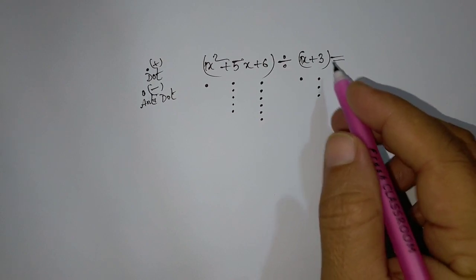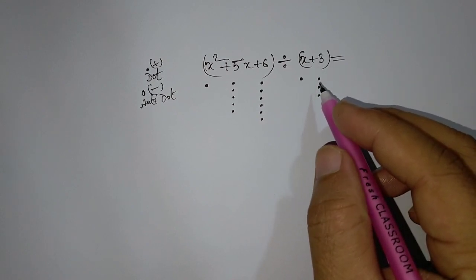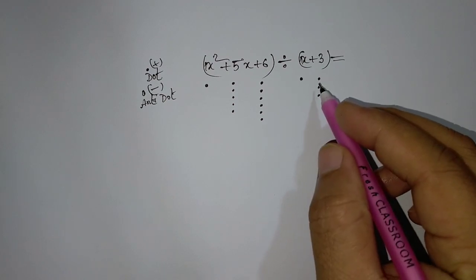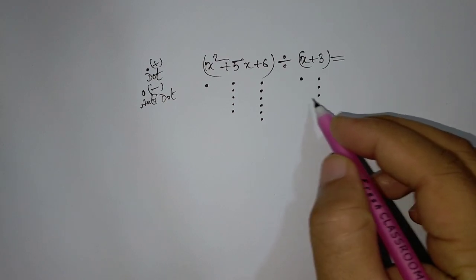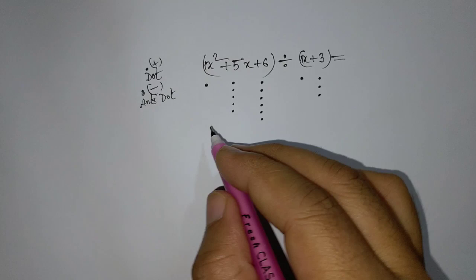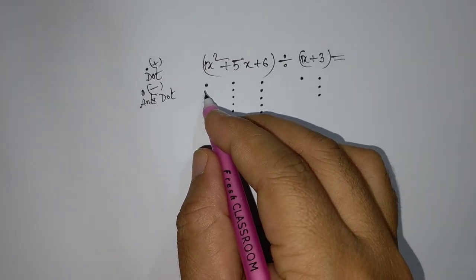For the divisor x, coefficient 1, we use active dot negative. One: we use anti-dot negative — one, two, three. Now we group them together like this.